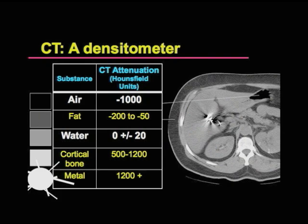Fat is not as dense, so it's a dark gray color. Water will be an intermediate color — it looks a lot like the liver. And bone will be dense; it's made of calcium, a type of metal. And metal, such as from surgery, will be very, very dense.